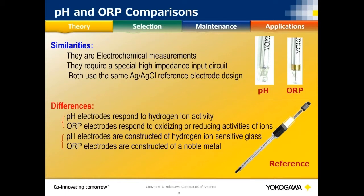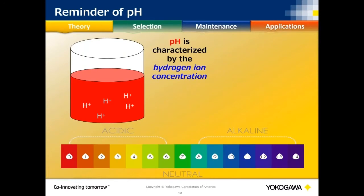What's similar and different about pH and ORP? You'll use the same silver silver chloride reference for both, so any problems with pH — coating and plugging — you can expect with ORP. Both are electrochemical measurements. With pH you have a glass membrane that reacts only to hydrogen. ORP uses a noble metal, either platinum or gold, and it reacts to anything oxidizing or reducing in your process, including hydrogen ion activity.